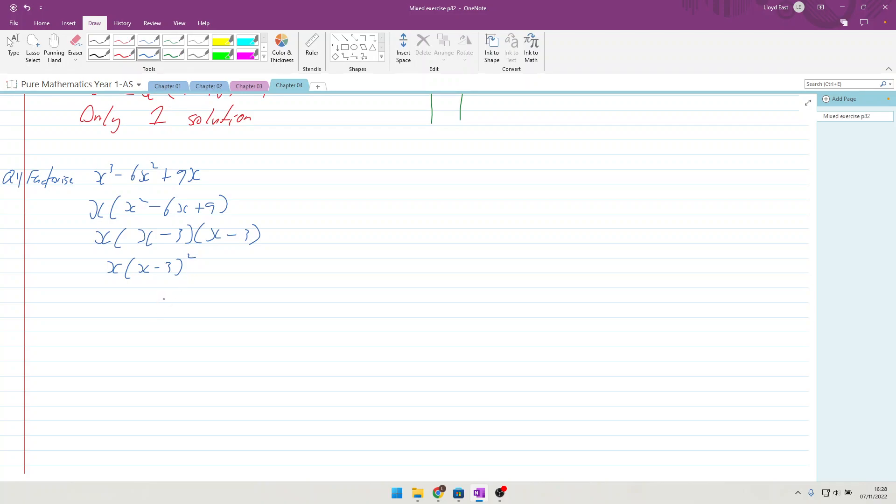Part b: sketch the curve, showing clearly the coordinates of the points where the curve touches or crosses the axes. We've got x equals 0 and x equals 3 and x equals 3. It comes through 0, it's a positive cubic, and it will just skim at x = 3. Don't forget to label everything and put arrows on it - not all examiners will let you off with it.